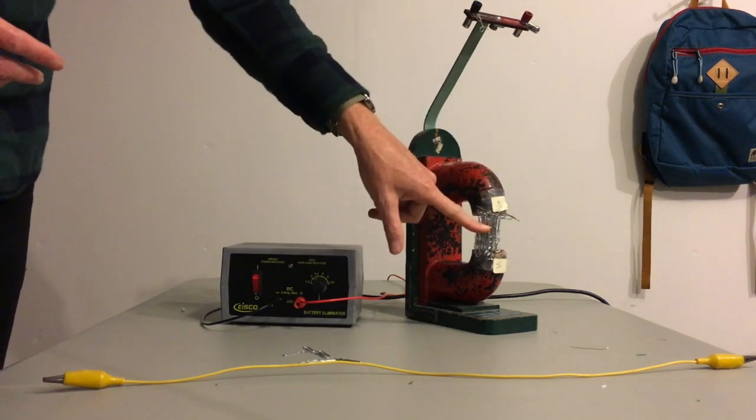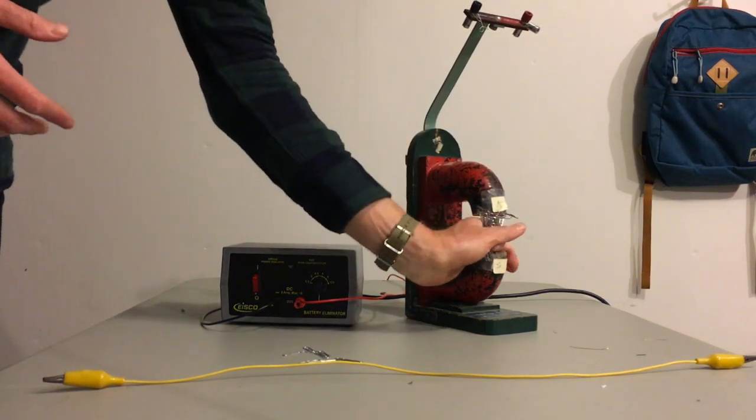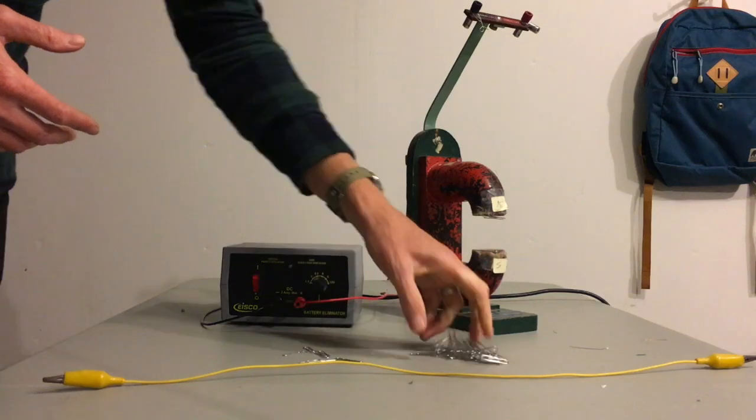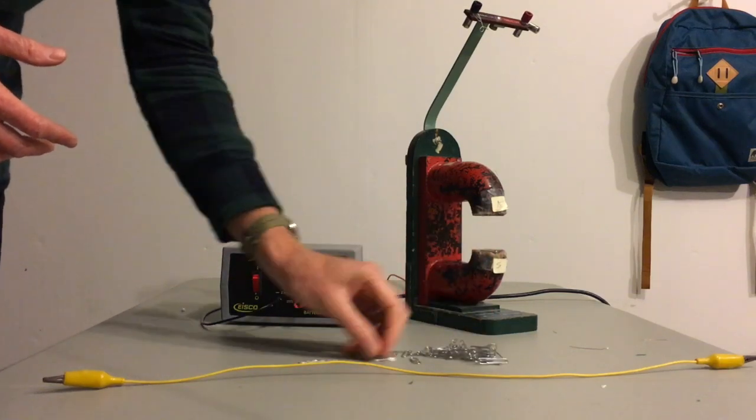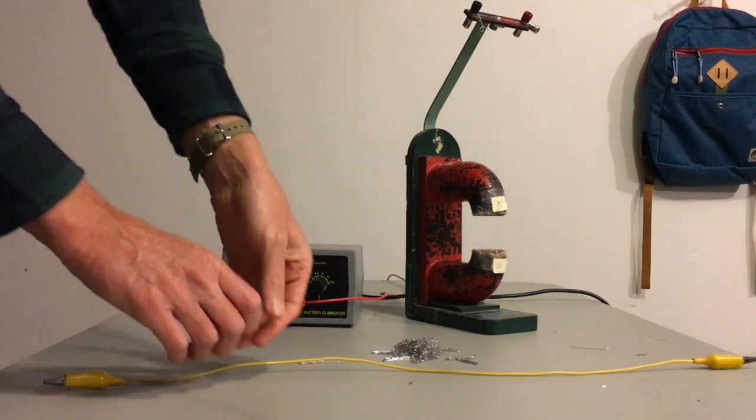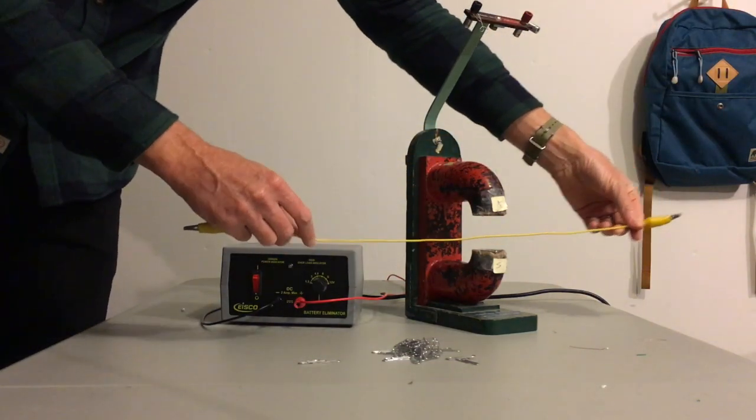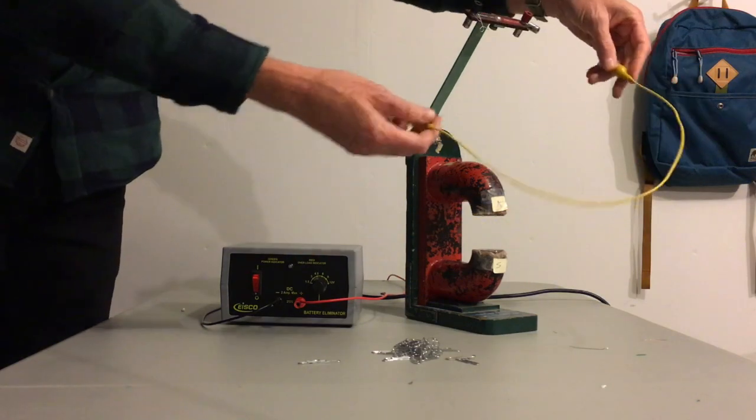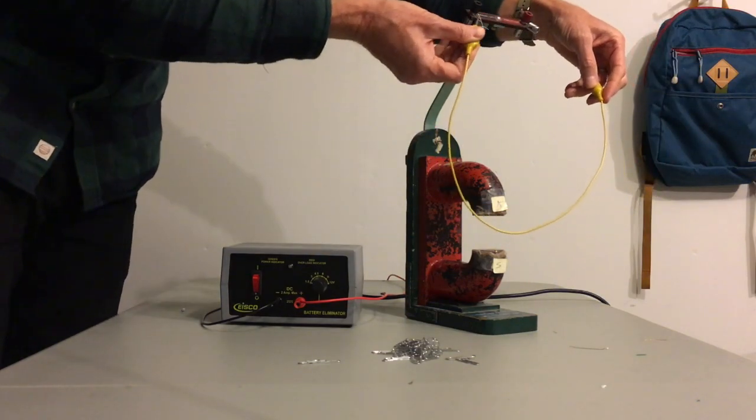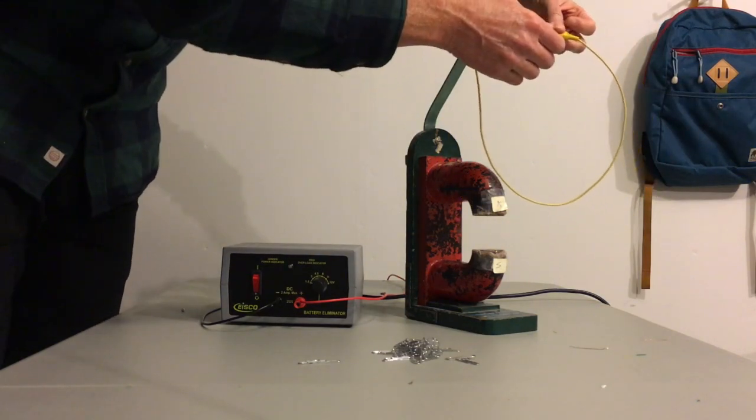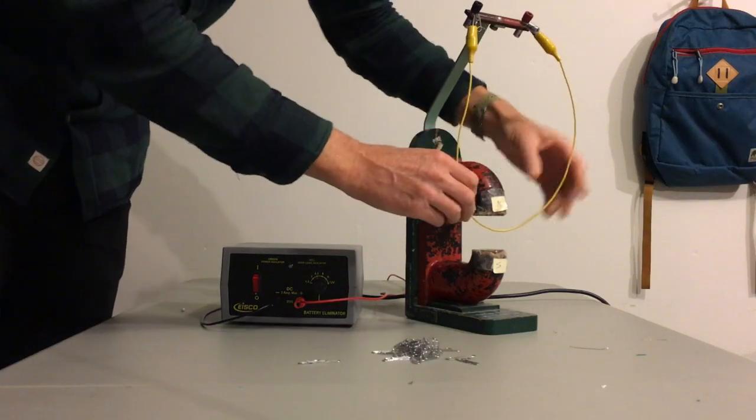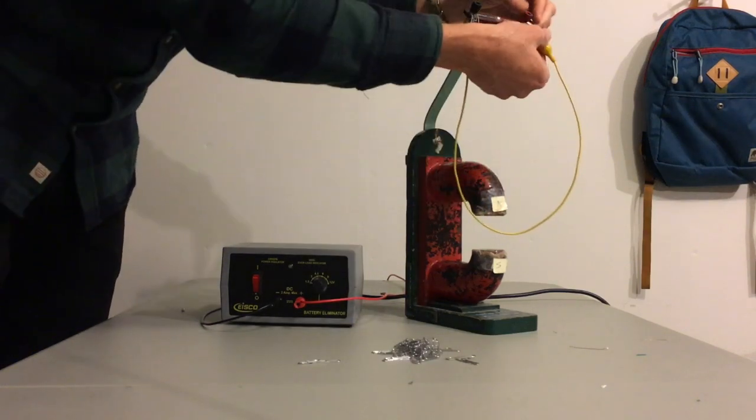So in this space right here where the magnetic field is really strong, I'm going to put a wire and show you the motor effect. I'm going to take this yellow wire and try to place it in this space where the magnetic field is really strong and see if it does anything. First I'm going to hang it on these paper clips up here and try to get it to sit right in that space.